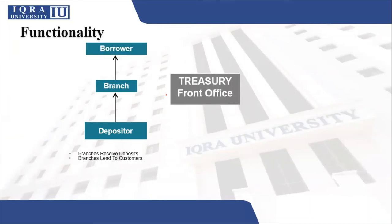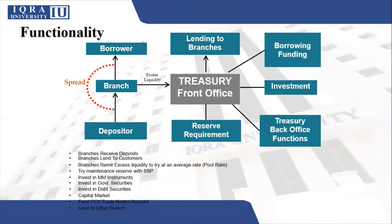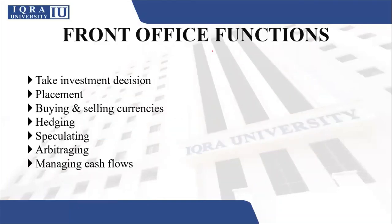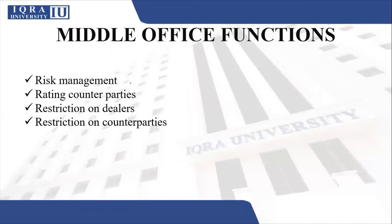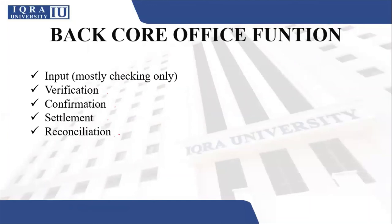The front office coordinates between borrowers and depositors, lends to branches, manages reserve requirements, and handles investment, borrowing, and funding. Looking at the front office function again: they take investment decisions, buy and sell, and engage in hedging, speculating, or arbitraging while managing cash flows. The middle office ensures risk is properly managed, rates counterparties, and oversees restrictions on dealers and counterparties. The back office verifies, confirms, settles, and reconciles everything.